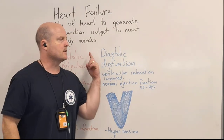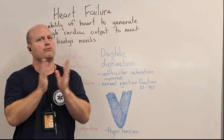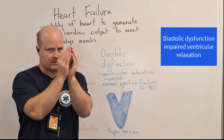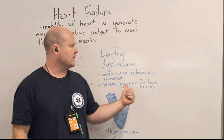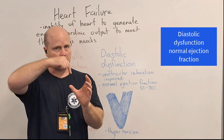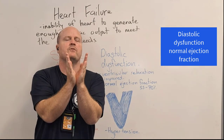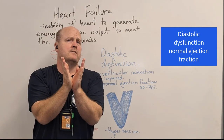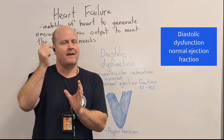Then we also have diastolic dysfunction. With this, we have good contraction but poor relaxation. Diastolic is the period of time when the ventricles relax and should be filling up with blood — ventricular relaxation is impaired. With diastolic dysfunction, we have a normal ejection fraction of 55 to 70 percent, but we don't have as much preload. If the ventricle has trouble relaxing and doesn't open up fully, it won't fill up with as much blood as possible. When it contracts it can still squeeze out 55 to 70 percent, but it just didn't fill up as much — and that's where the problem lies.